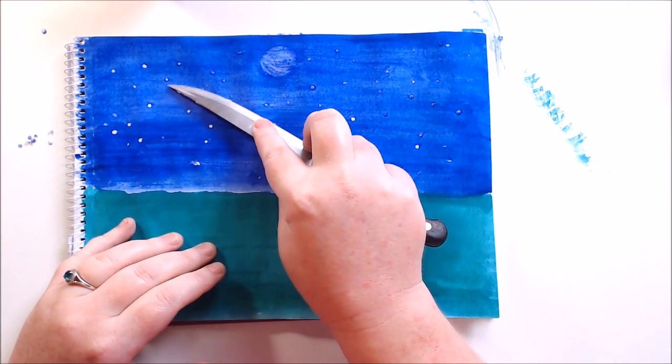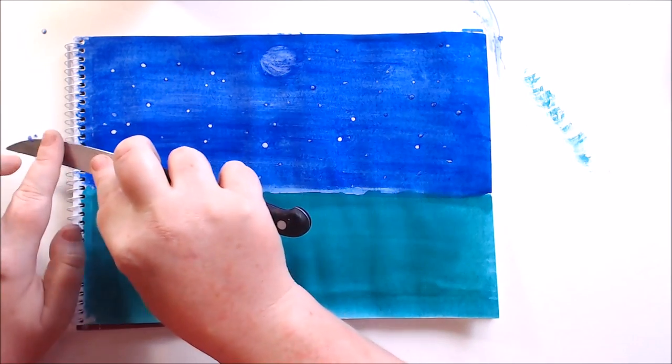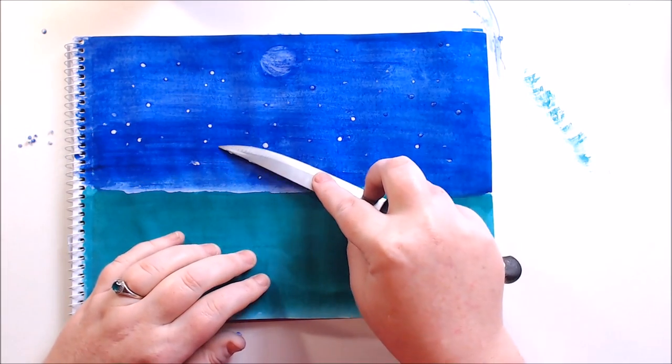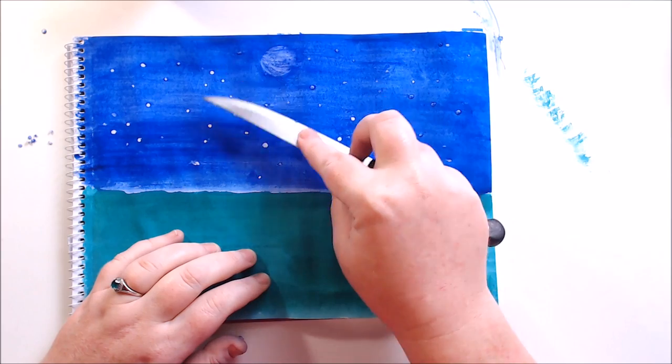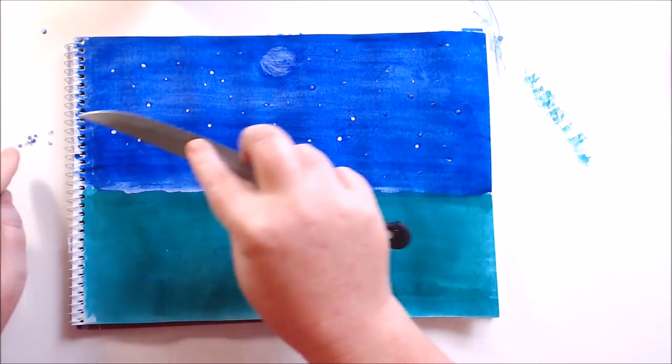I do find it's probably better to go in one direction rather than trying to go back and forth. If you go sort of all one direction, like I'm trying to go all upwards, it will allow the little dots to kind of catch on the edge of the knife and you can just wipe them off.